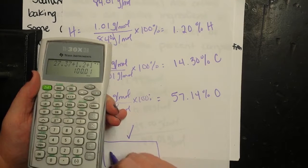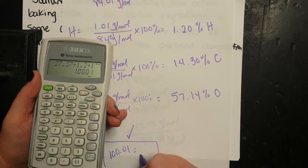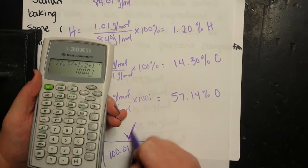I'm only one hundredth of a point away and that's probably due to one of these guys being rounded higher than it needs to be. But I get 100.01. That's basically 100 for me. So that is good enough.